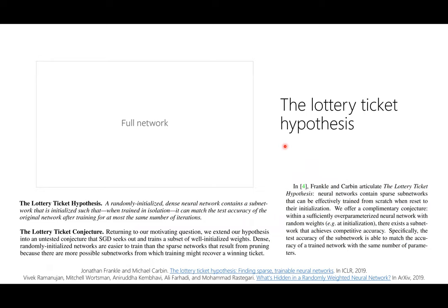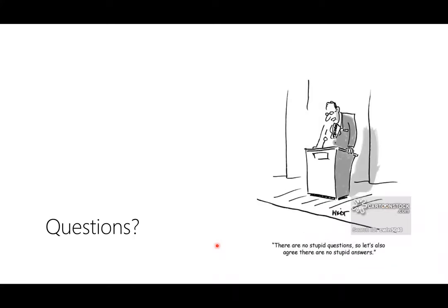I'm going to skip the lottery ticket hypothesis for time, but it's another recent line of work with connections to explaining why depth helps. The basic idea is that for any randomly initialized but very large model, there is a subset of that model that — just by random chance — is already pretty good at the task you're trying to optimize towards. I definitely recommend checking out those papers if you're not familiar with it.